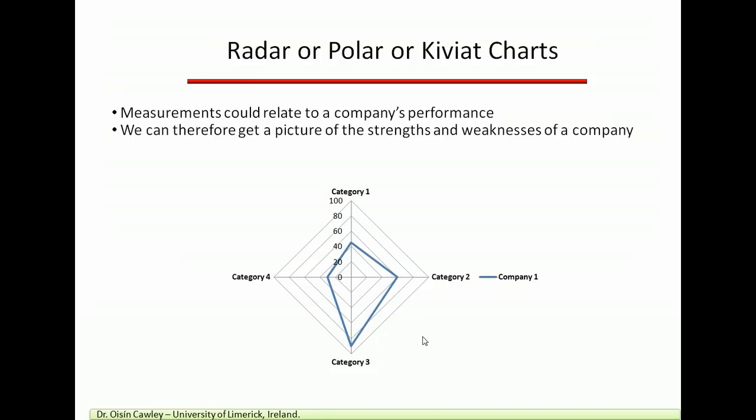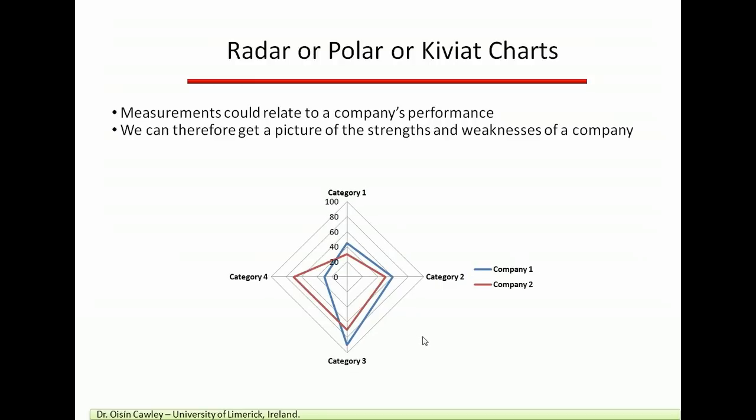Now, this becomes much more powerful if we can superimpose, let's say, another company. So if we take company two here, the red line, we superimpose its values on top, then what we quickly have is a comparison across multiple dimensions for multiple companies.